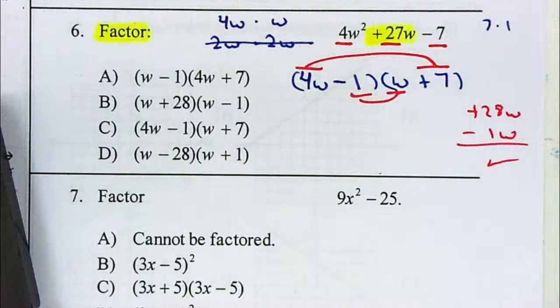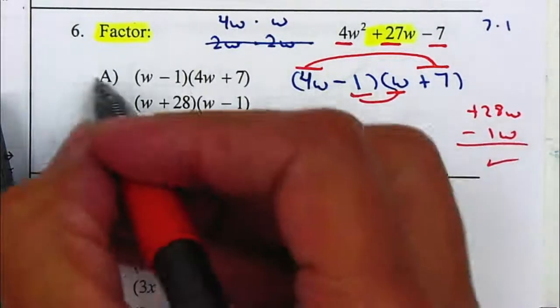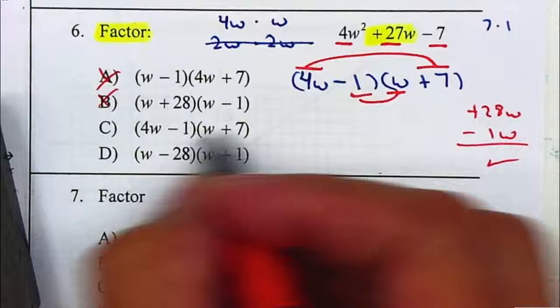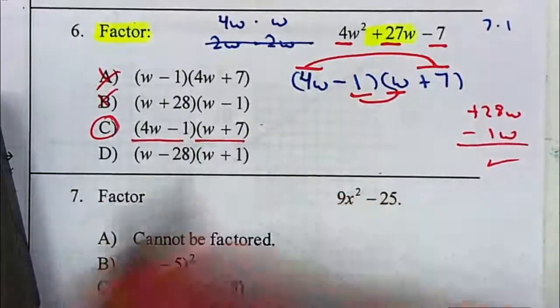And be careful when you select your answer. So 4W minus 1, that's letter C, and W plus 7.